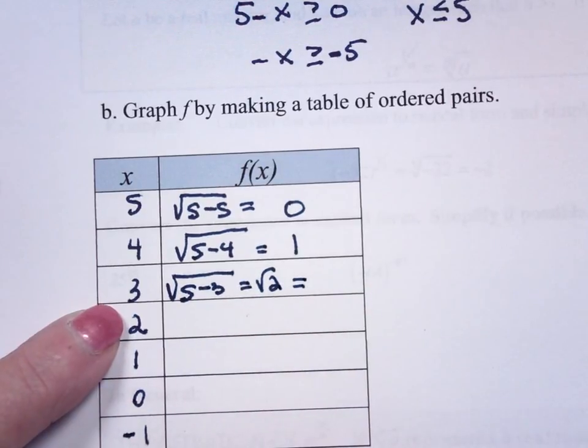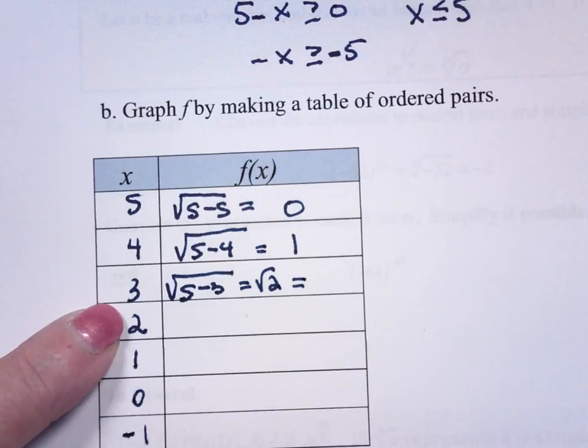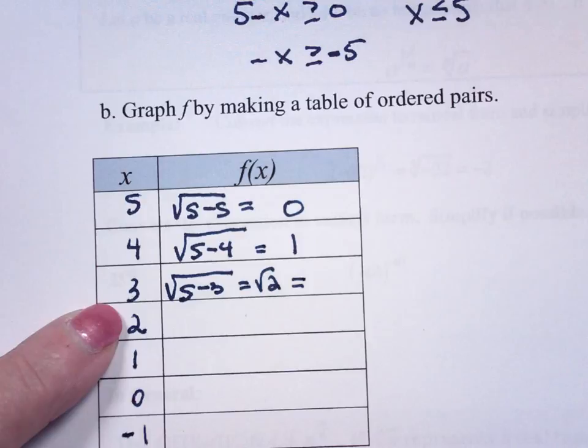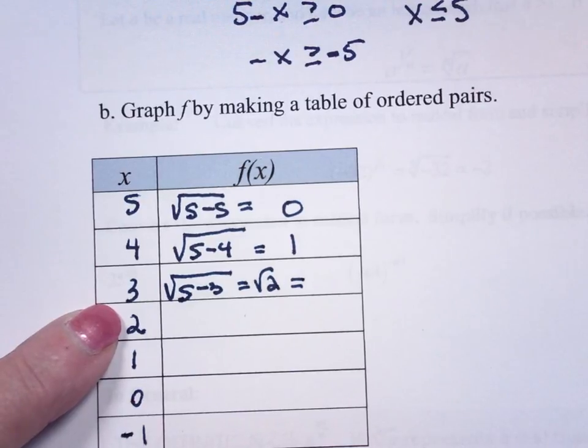And the square root of 2 is... I need to get myself out of here. Second, square root of 2 is 1.4.